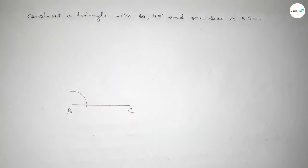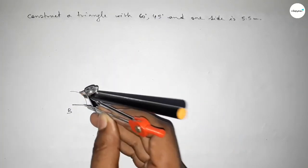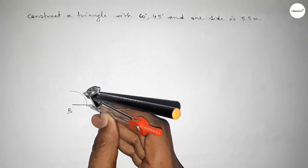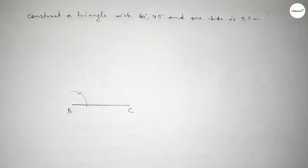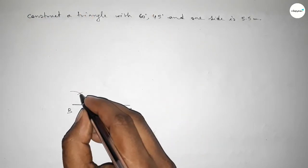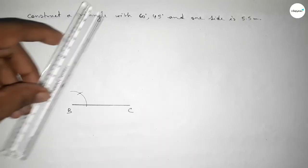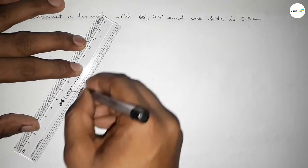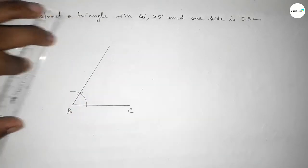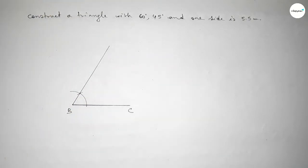Putting the compass at B and taking any length, drawing an arc here. Then putting the compass at the arc point with the same length and cutting here, so both curves intersect at a point. Joining this point to B gives us a 60 degree angle.